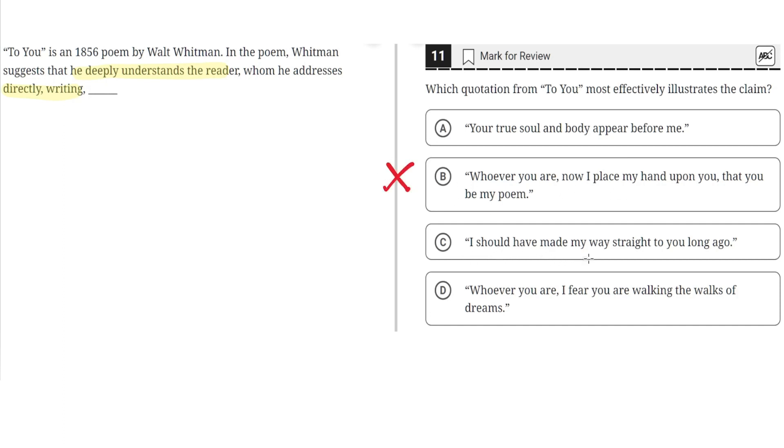C, I should have made my way straight to you long ago. This is incorrect for the same reason as B, because although it does directly address the reader, it doesn't show that he deeply understands the reader.